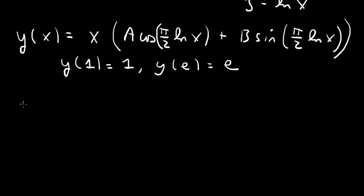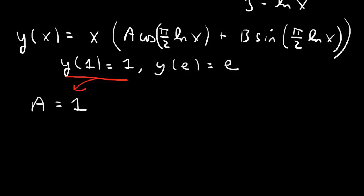For y of 1: log 1 is 0, so cosine 0 gives a, and sine 0 is 0, so y of 1 is simply a. From the first boundary condition we get a equals 1.